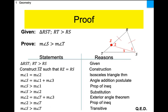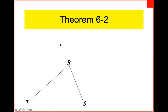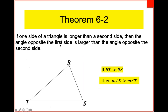That was a slick proof. Taking a step back: what did we just prove? If one side of a triangle is bigger than another side, then the angle opposite the big side is bigger than the angle opposite the small side. This is Theorem 6.2: if one side of a triangle is longer than a second side, then the angle opposite the first side is larger than the angle opposite the second side. That kind of makes sense — the larger an angle opens up, the longer the side opposite it becomes.